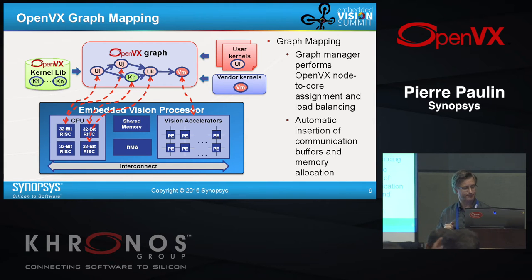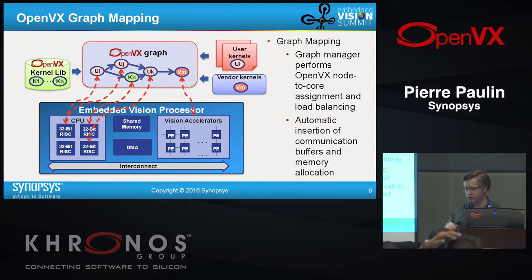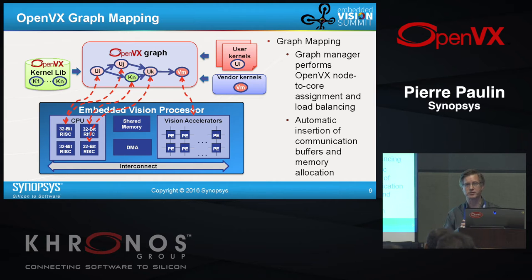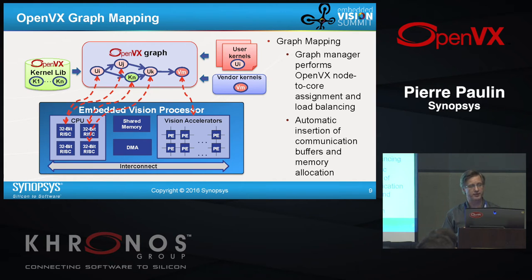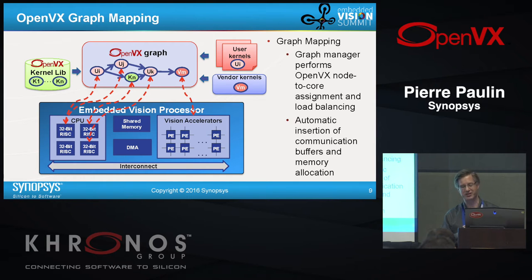One of those vendor kernels is a CNN that will run on the CNN engine, while all other kernels run on the general-purpose processors. For example, UI runs on the first processor, UJ runs on the same processor, while a standard kernel KN is load-balanced on the second processor. As a programmer, you don't want to think about this. You simply define your high-level data flow using the OpenVX graph, and internally write kernels using C, C++, and in the future OpenCL C. We presented work on OpenCL C yesterday, and it's encouraging to see alignment across the community.